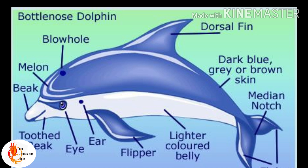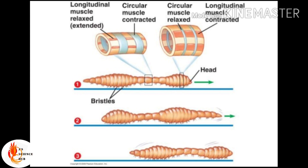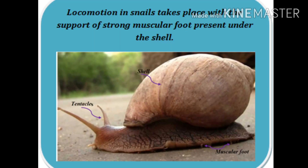We humans and other animals like cheetah and toad use our limbs for locomotion. Fishes use their flippers for locomotion. Apes such as crow and parrot use their wings for locomotion.